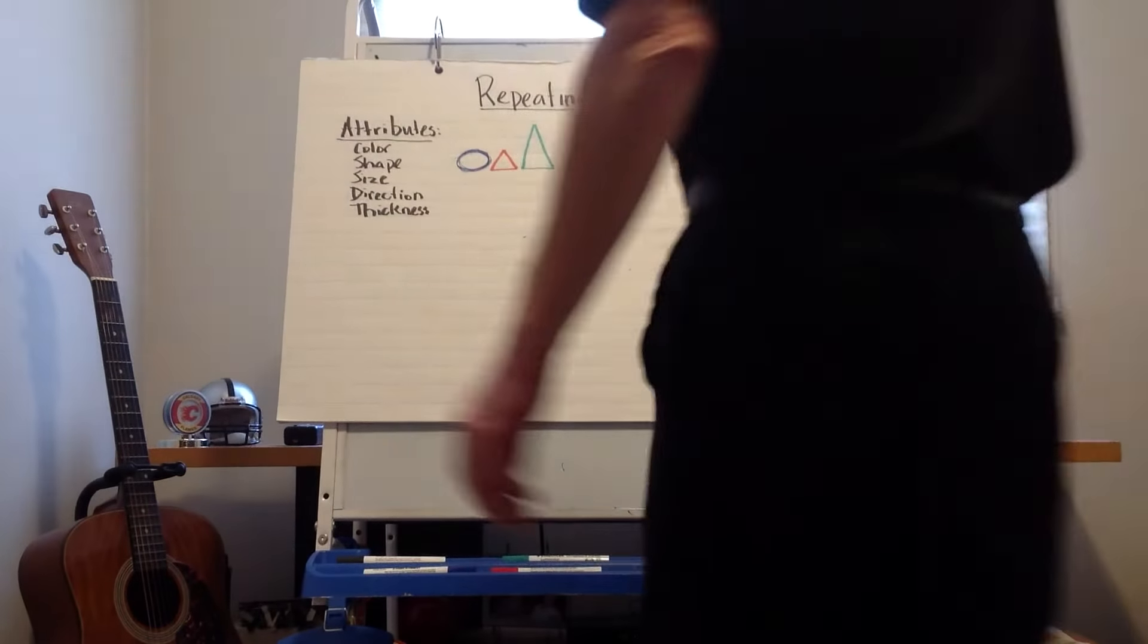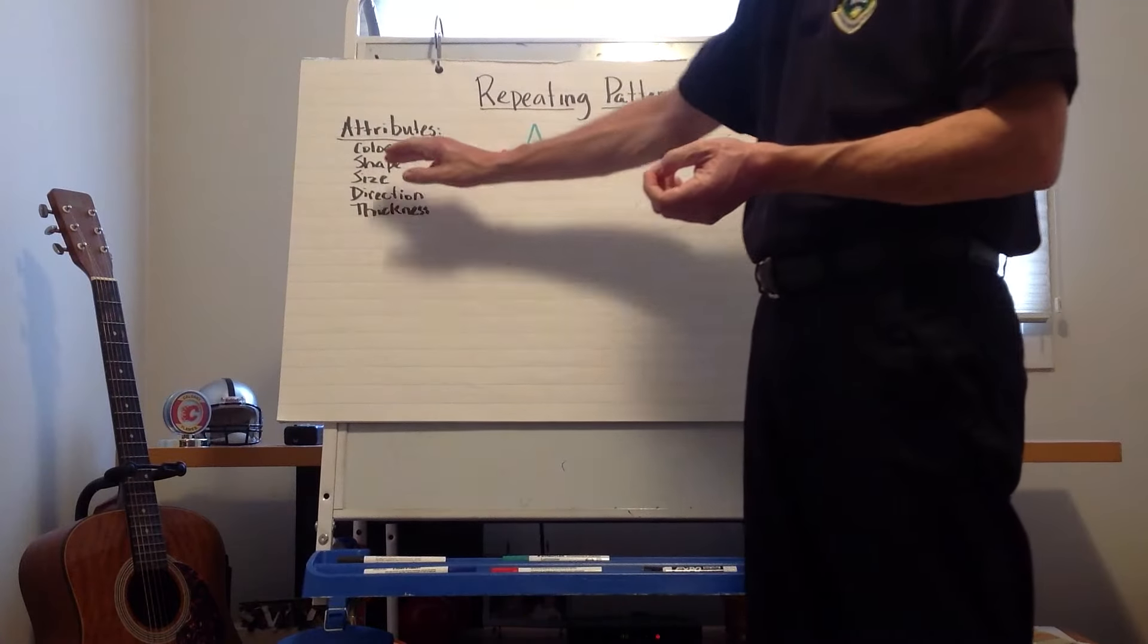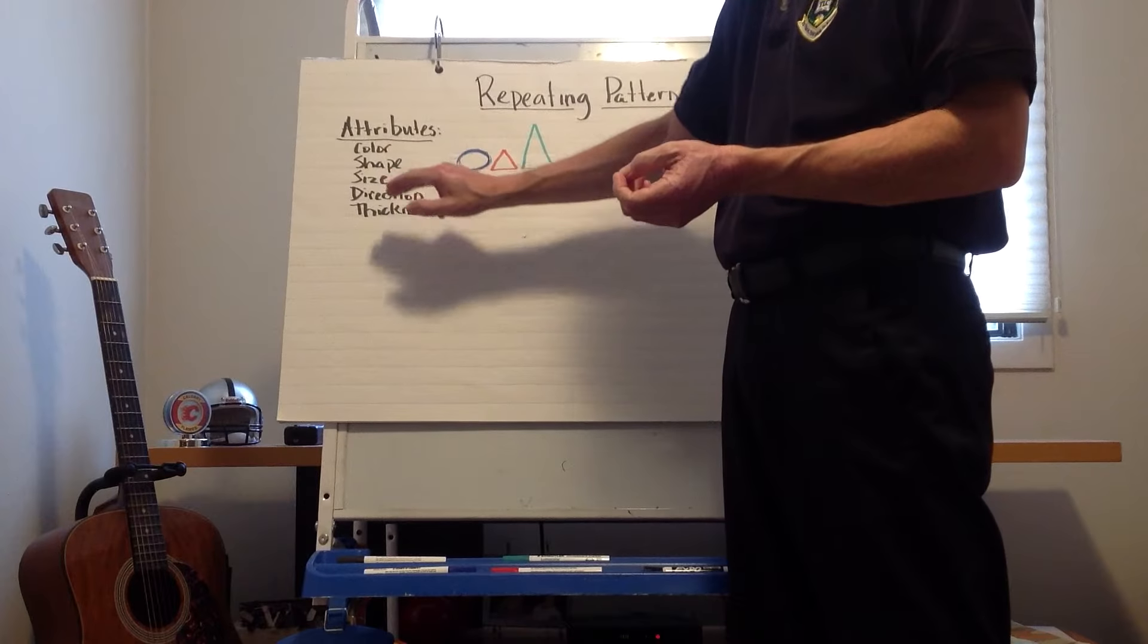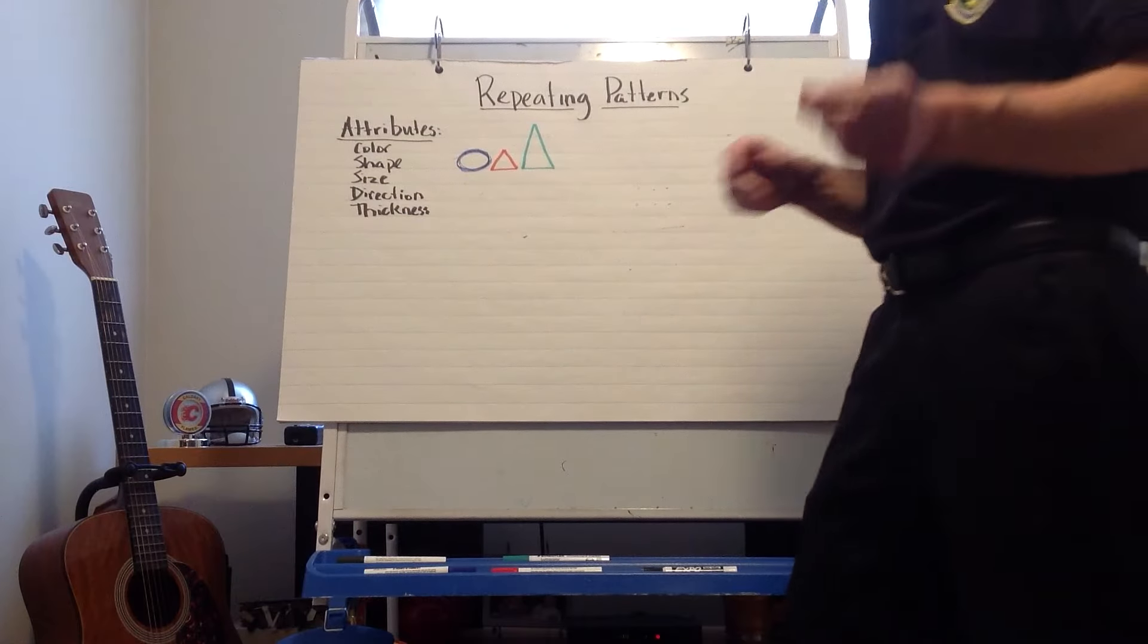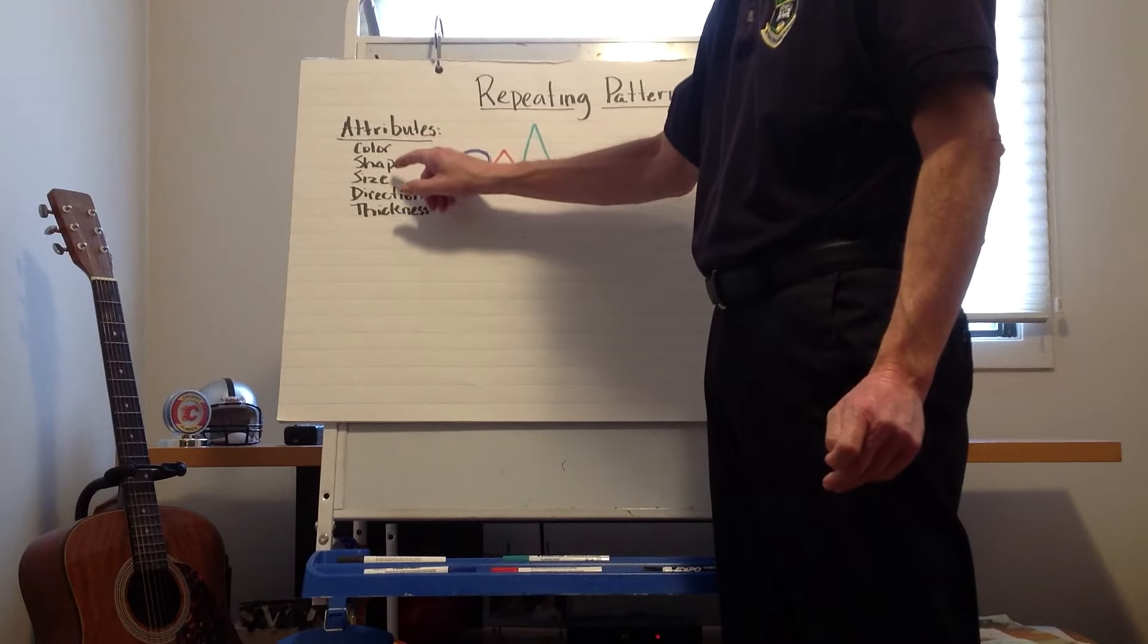All right friends, in math we're talking about repeating patterns and we're learning how to use these attributes: color, shape, size, direction and thickness. Well, we haven't talked about direction and thickness yet, but we have talked about color, shape and size.